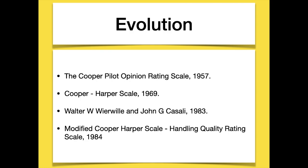The title of the paper was 'The Use of Pilot Rating in the Evaluation of Aircraft Handling Qualities' by George E. Cooper and Robert P. Harper Jr., and thus the name Cooper-Harper Handling Quality Rating Scale. The scale has a decision-tree format and was used to assess aircraft handling and control by the operator, but could also be used to assess workload. Since many technological innovations occurred, almost all aviation sectors became fully automated, and so the new modified Cooper-Harper Scale was introduced in 1984.